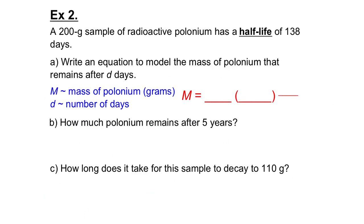Now this example talks about something called a half-life. A 200-gram sample of radioactive polonium has a half-life of 138 days. You're starting with 200 grams of polonium. Every 138 days, you're going to have half as much of the sample. So you start with 200 grams; after 138 days you have 100 grams; 138 days later you have 50 grams; 138 days later you have 25 grams. Every 138 days you have half as much as you did before.